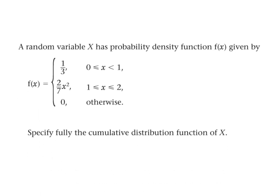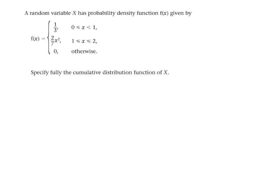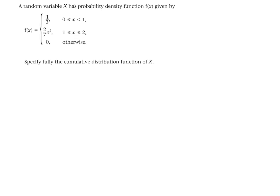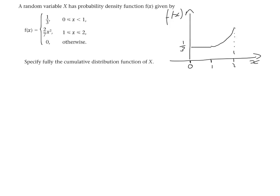Now let's move on to something more complex, where we've got two different parts of the PDF. As we can see, there are two functions to deal with here. Between 0 and 1, the function has a height of one third. Between 1 and 2, it's a positive quadratic. And it's 0 otherwise.